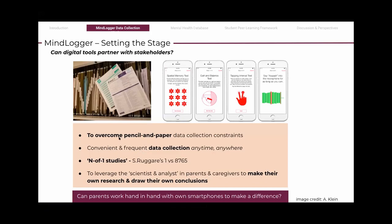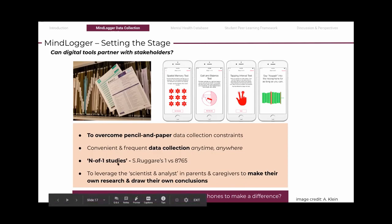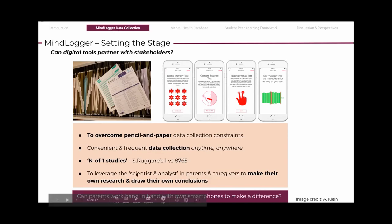Digital tools provide the opportunity to overcome pencil-and-paper data collection constraints for convenient and frequent data collection in real time and in natural environments. One story I really liked: a person with Parkinson's disease spends only one hour in the whole year with her doctor and the rest of 8,000 hours in self-care, which prompted her to create her own app to track her symptoms. And who can know the child better than the parents and caregivers who are constantly observing, analyzing, and responding to find solutions? So can parents use their smartphones to make a difference?